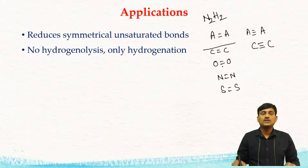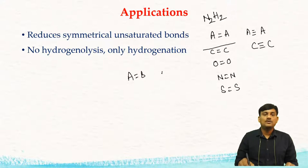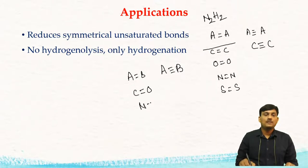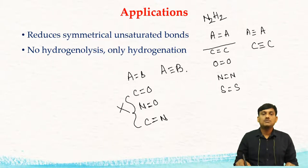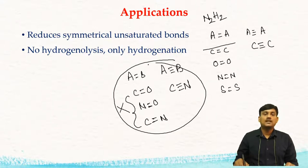However, you cannot reduce unsymmetrical unsaturated bonds such as A double bond B or A triple bond B. For example, C=O, N=O, or C=N — these types of bonds cannot be reduced by diazene. Similarly, unsymmetrical triple bonds such as C≡N cannot be reduced by diazene.